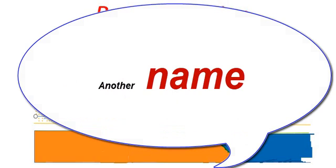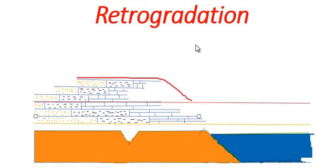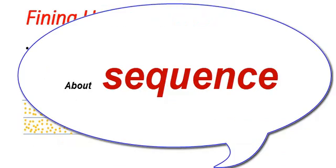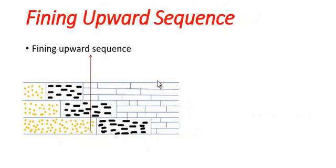In general, transgression is another word used for retrogradation. During retrogradation, fining upward sequence forms.